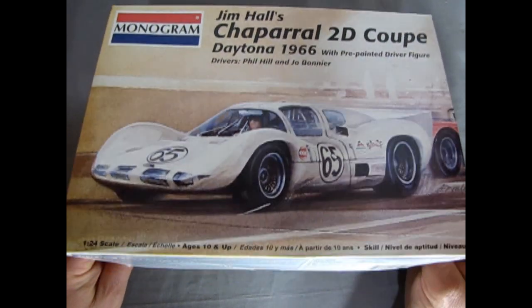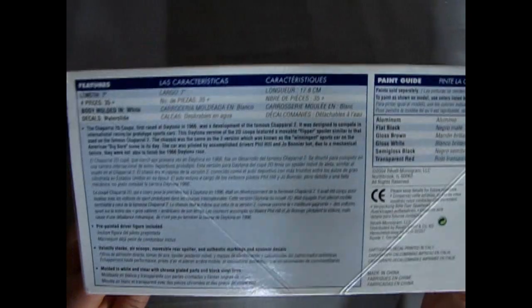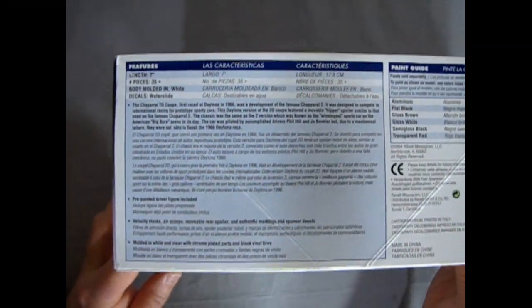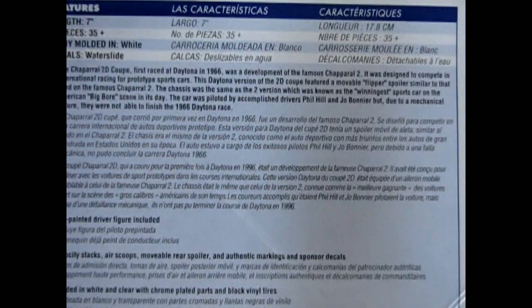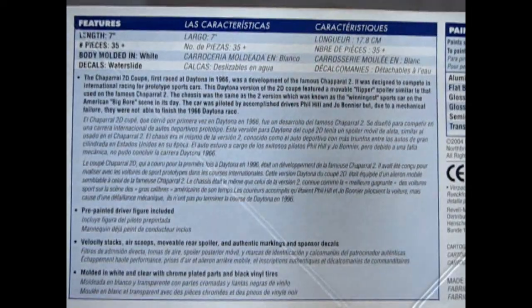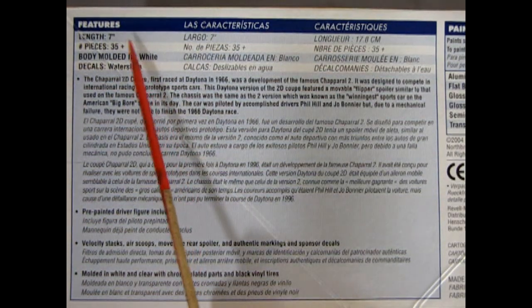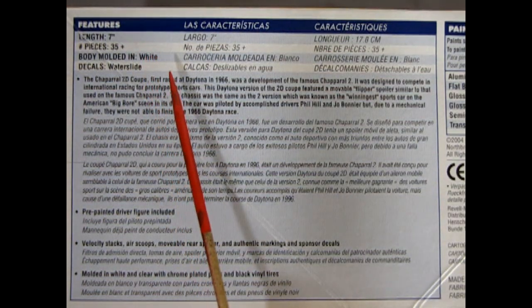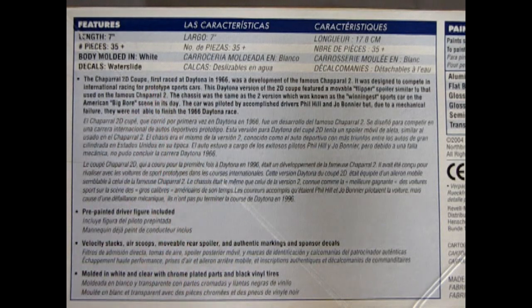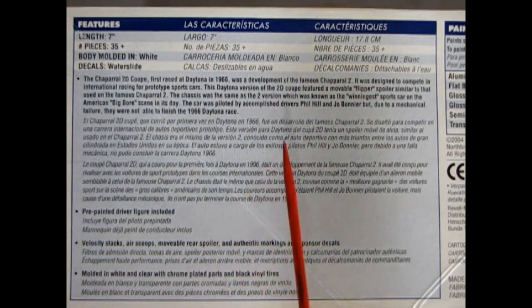All right let's just take a look at the sides of this box here. First off you can just zoom in on this panel. So what we have here is a model kit that is seven inches in length with 35 pieces molded in white and the decals are water slide. And in here we get a whole bunch of cool details.